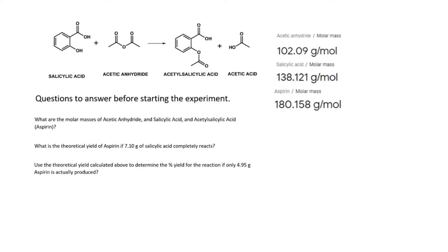The following questions are pre-lab questions. We need to get some background information before we actually do the lab, and then we're going to be answering some questions after. Let's look at question number one: What are the molar masses of acetic anhydride, salicylic acid, and acetylsalicylic acid aspirin?